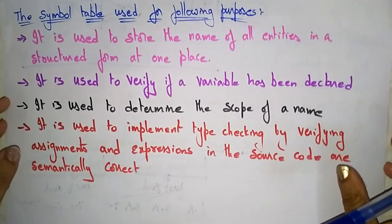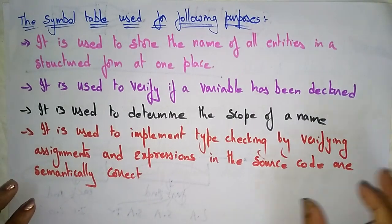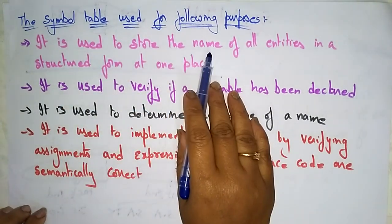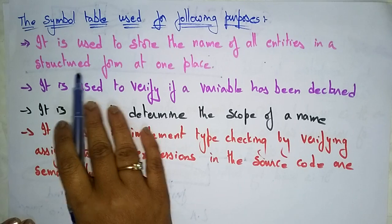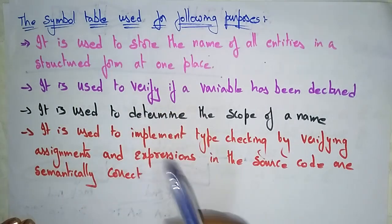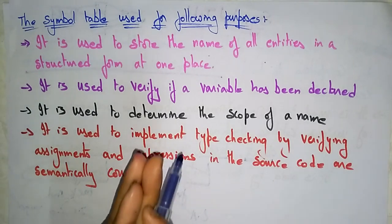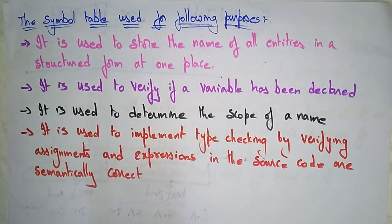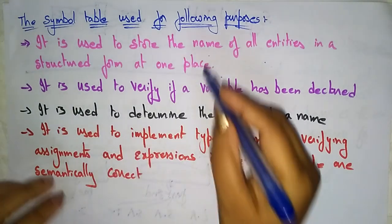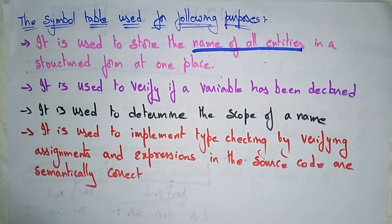The symbol table is used for the following purposes. First, it is used to store the names of all entities in a structured form at one place. The names of all entities will be stored in the symbol table in a structured form.